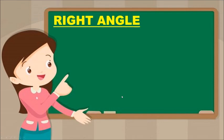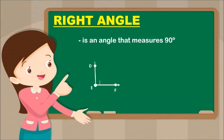Next is Right Angle. A right angle is an angle that measures exactly 90 degrees. This is read as: Angle DEF is a right angle.